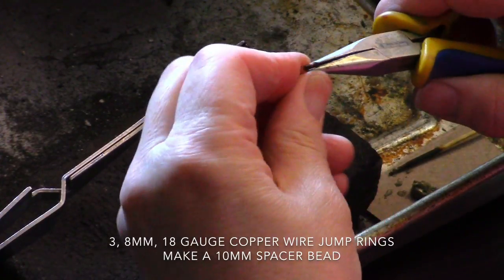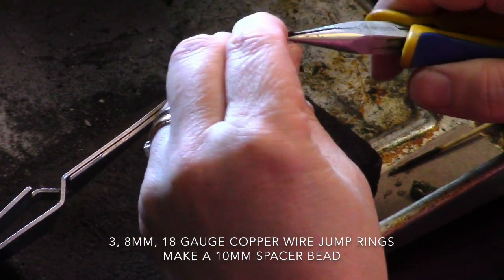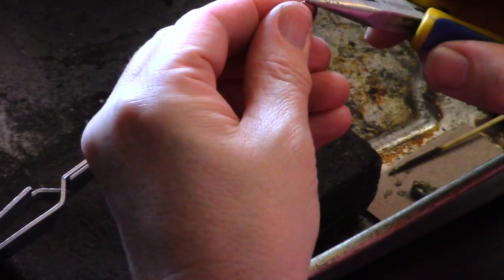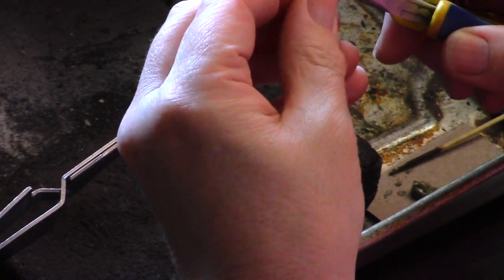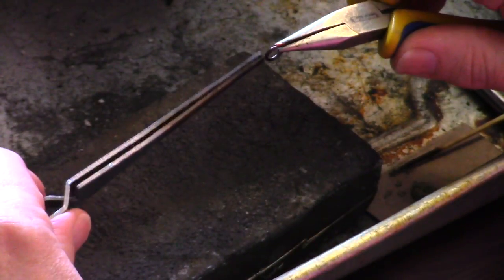Today I'm working with three 8mm jump rings that I've cut myself and filed the ends so that they fit nice together. You want a really nice tight fit when you're working with jump rings when you're soldering.